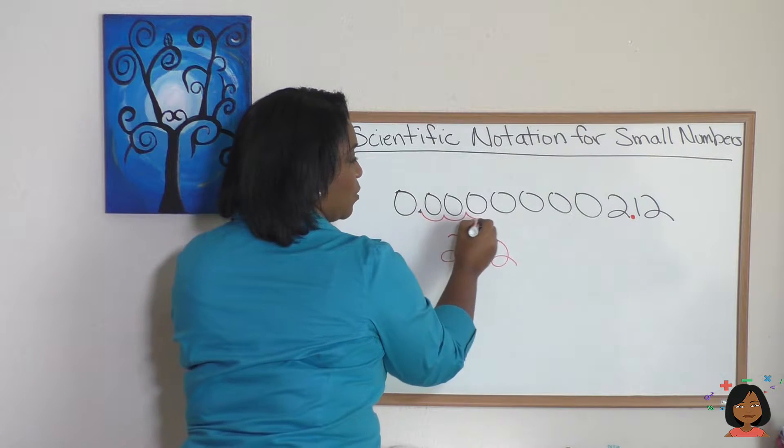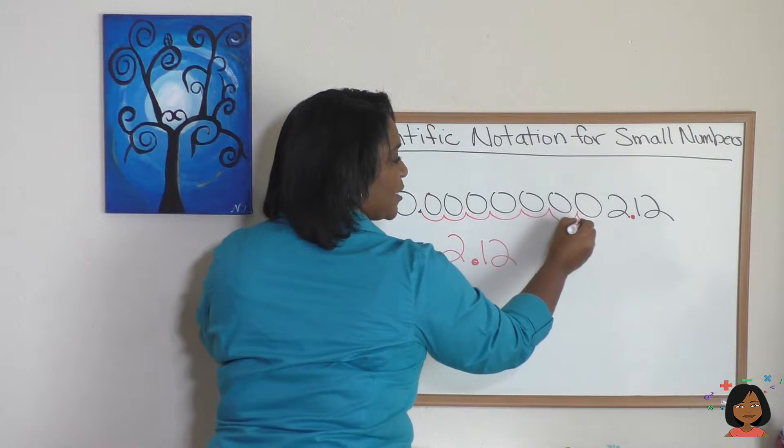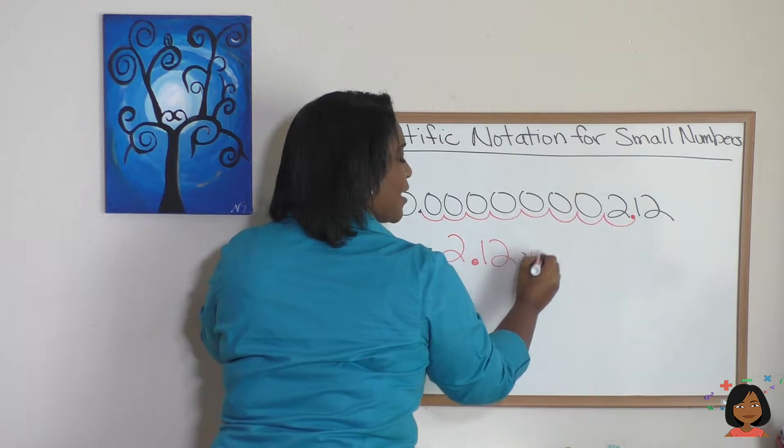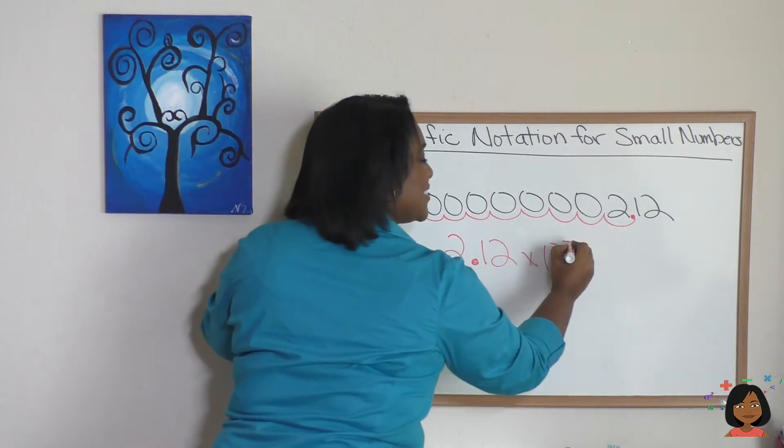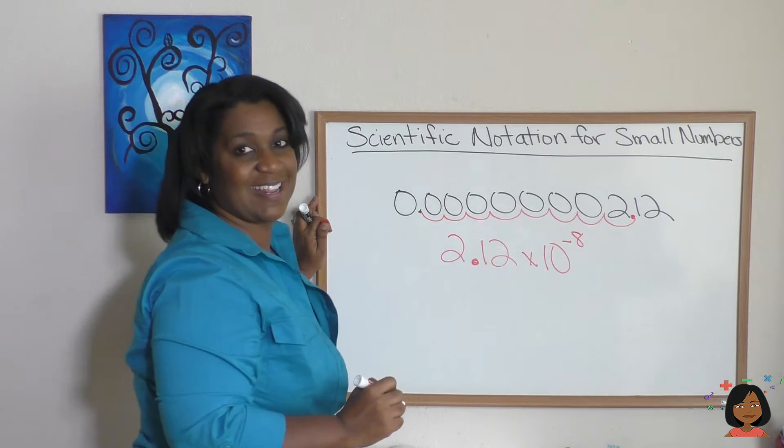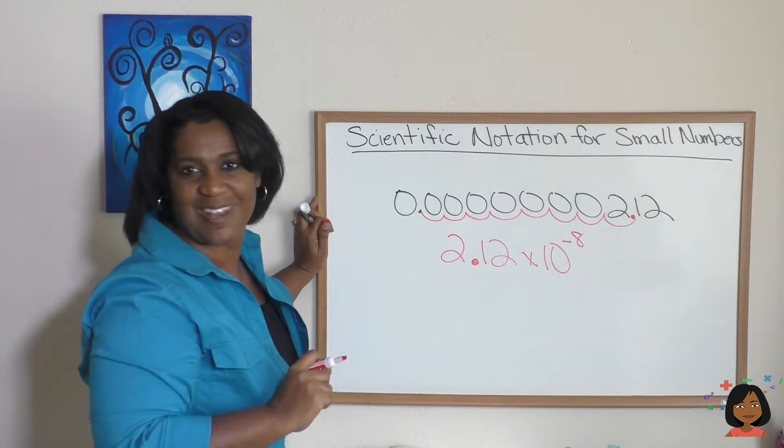Here we go: 1, 2, 3, 4, 5, 6, 7, 8 times 10. But the exponent here is negative: 10 to the negative 8. And that's how we get really small numbers.